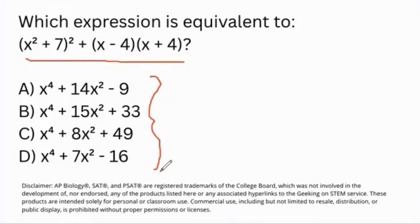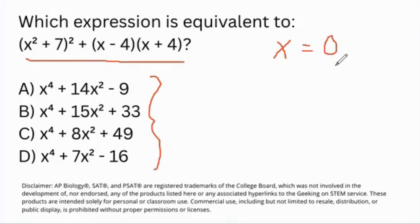If you plugged this into Desmos and tried to find the equivalency, it really takes some time to individually enter the problems. So let me give you a little shortcut: let's replace one side, which is equivalent to the other side — they only have one variable, x. Let's replace it with a number of our choice. Oftentimes, the best number choice is zero, and this is something you can utilize in your answer choices as well.